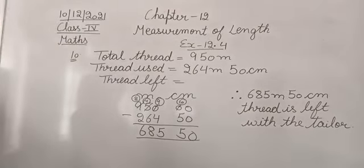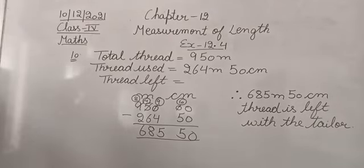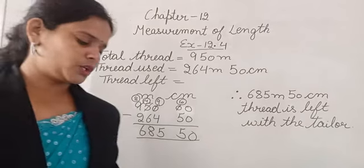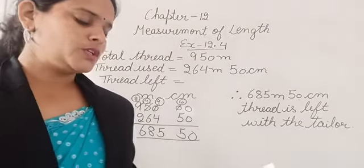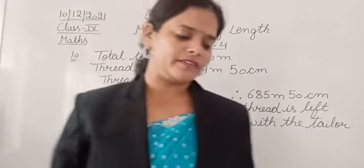You can pause it here. Moving next to question number 11. The question is: Sachin covers a distance of 50km 700m by car and 12km 900m by cycle. How much more distance does he cover by car?